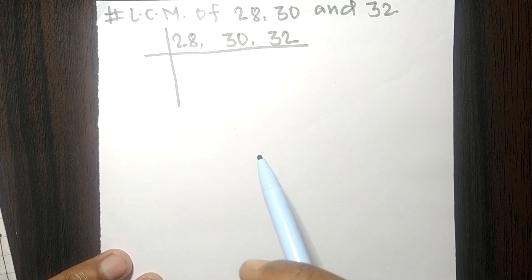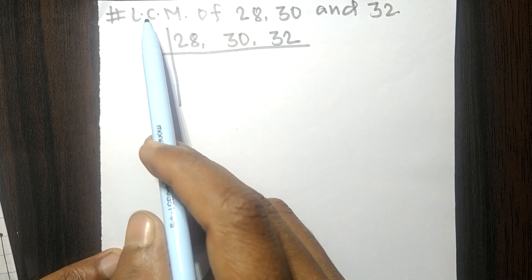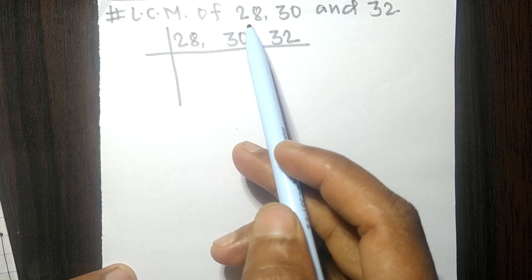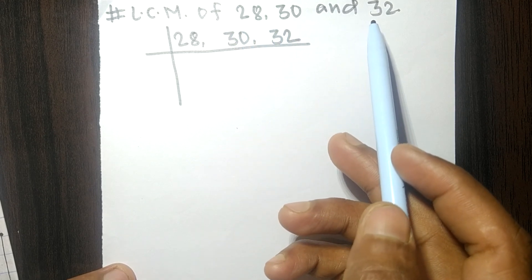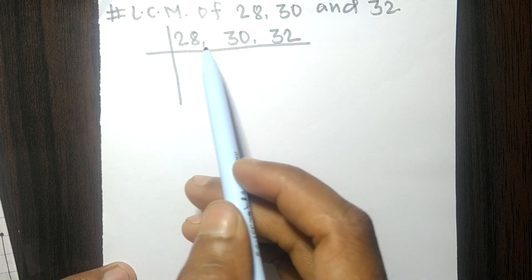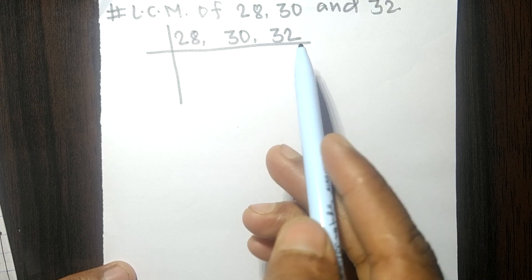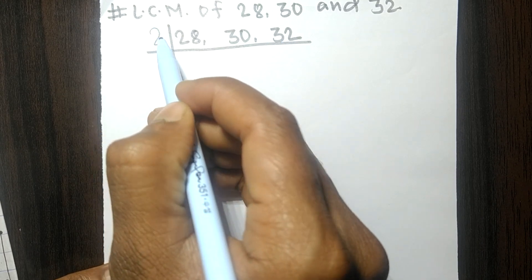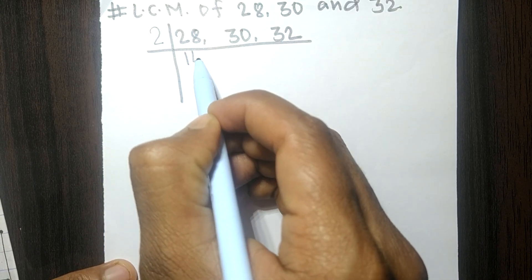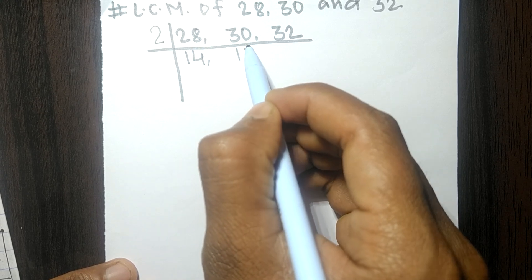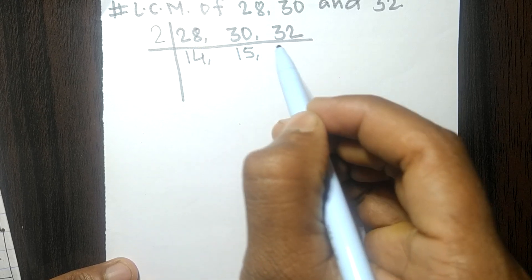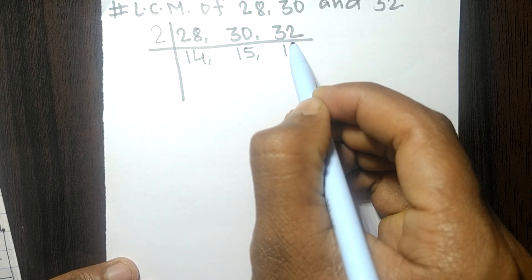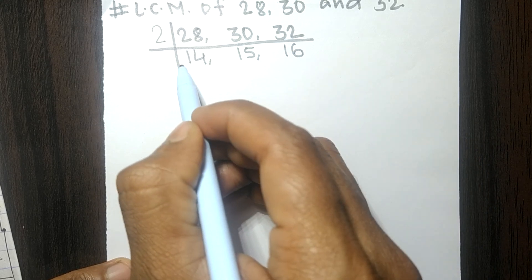So today in this video we shall find LCM of 28, 30 and 32. These all numbers are exactly divisible by 2, so 2 times 14 mean 28, 2 times 15 mean 30, 2 times 16 mean 32.